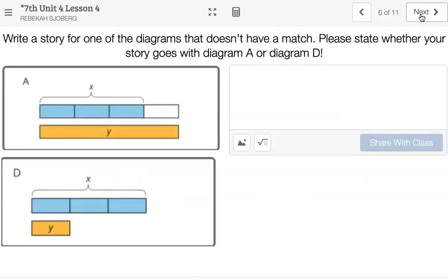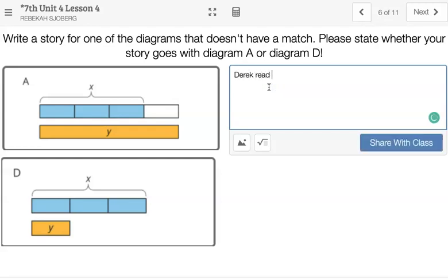On slide 6, you're just going to try to write a story for one of the diagrams that doesn't have a match. And you have options here, so hopefully it won't look exactly like mine. But I notice in this one, if we start with X as the original, it looks like Y has a little extra 1 third compared to X. So I might say something like, Derek read X books. Emilia read 1 third more than that. That goes with story A.